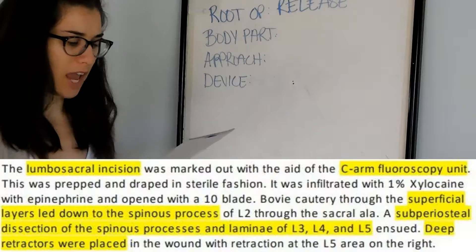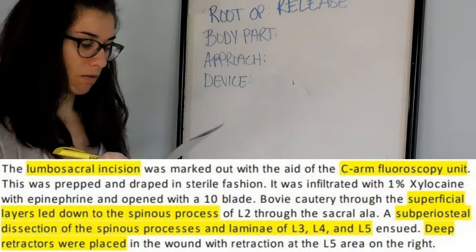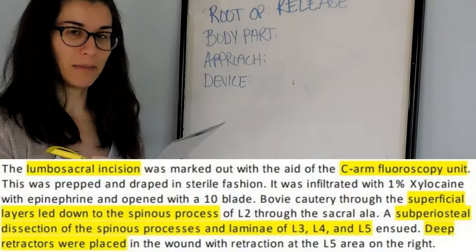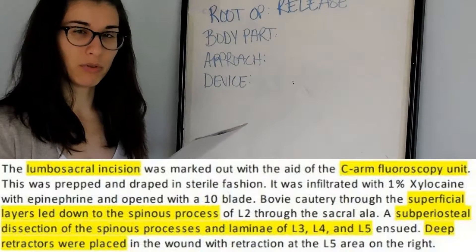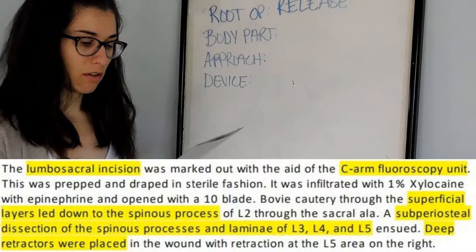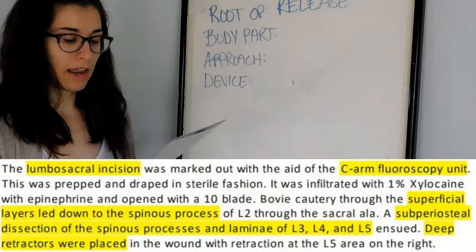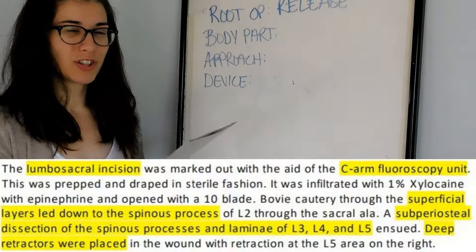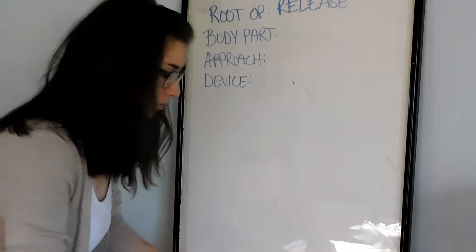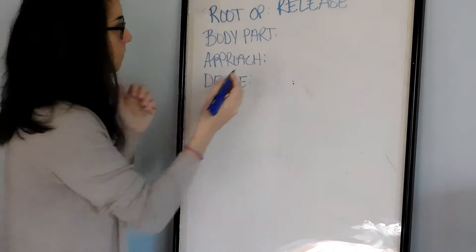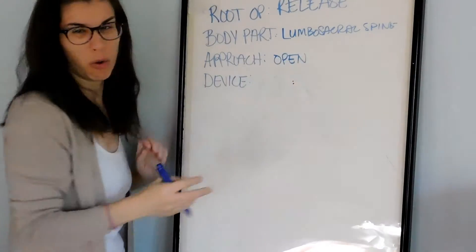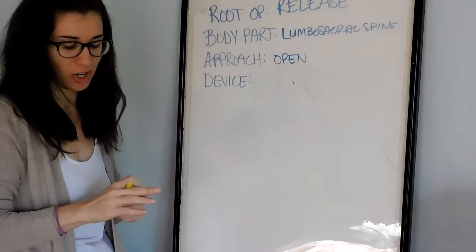The incision was prepped and draped in sterile fashion, infiltrated with 1% Xylocaine with epinephrine, and opened with a ten blade. I'll highlight the fluoroscopy unit — we may need to code for it. Since they use the word 'incision' and a blade, it's usually going to be something bigger than a puncture, so we're probably looking at an open approach. Body part we'll get more specific on, but approach I'm going to say open.